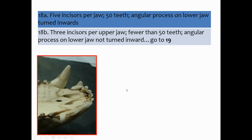Couplet 18: five incisors per jaw, 50 teeth, angular process on lower jaw turned inwards — or three incisors per upper jaw, fewer than 50 teeth, angular process on lower jaw not turned inward. You count the incisors by looking at each half separately. This skull has three incisors per upper jaw and the angular process is not turned inward, so we're going to 19.